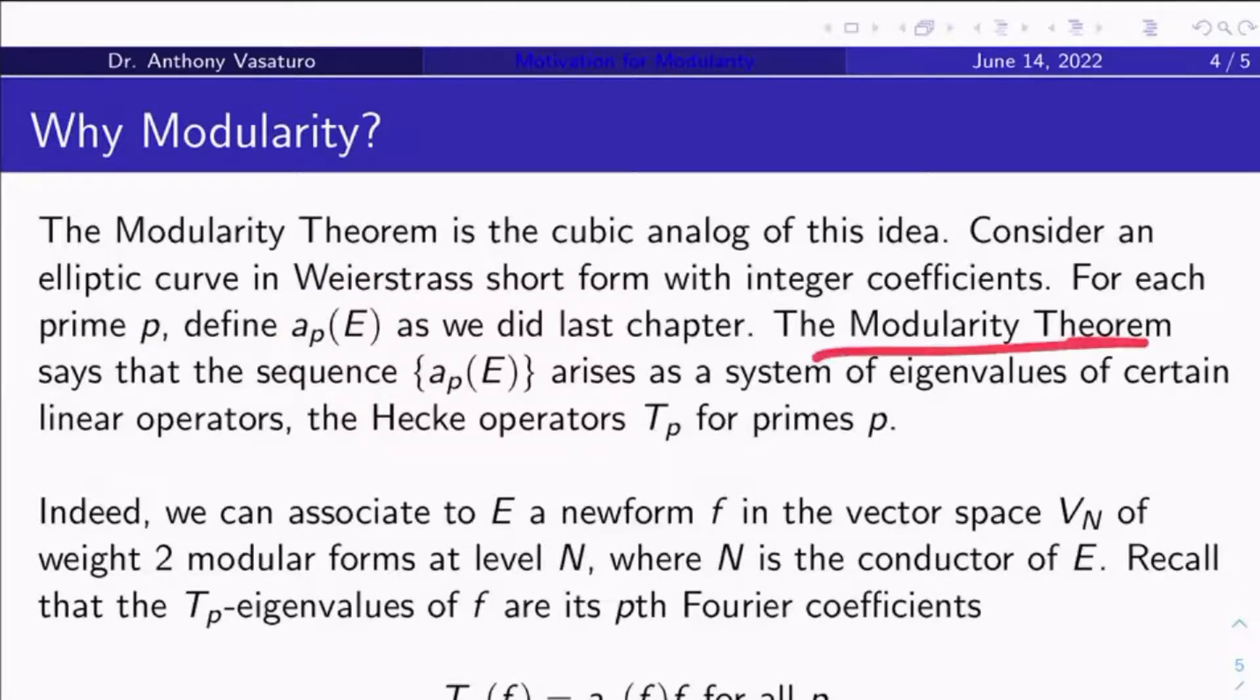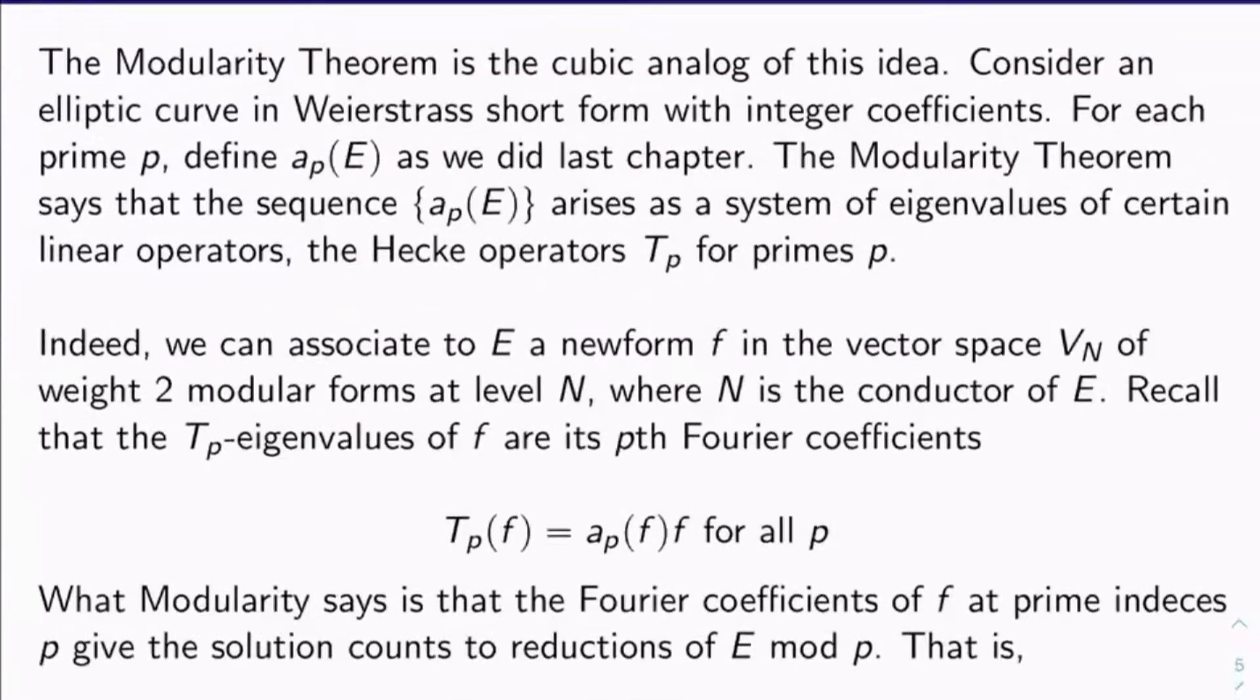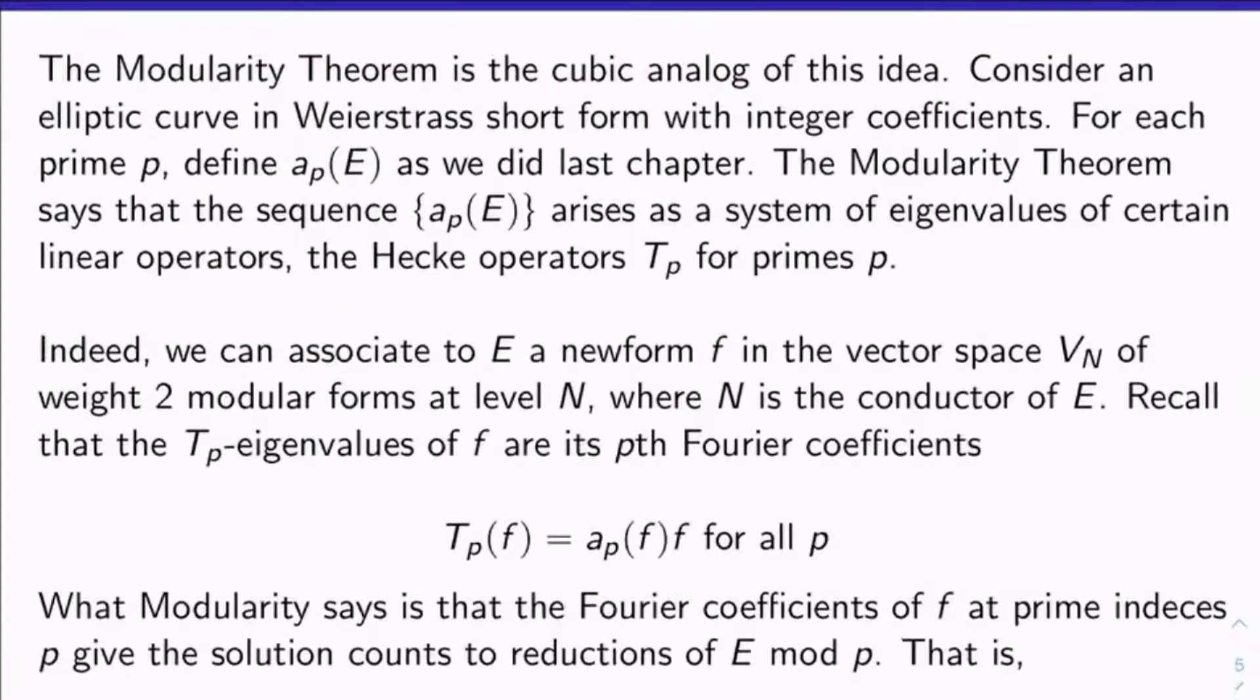What the modularity theorem says, as we now know, it says that the sequence of all these a_p(E)s, they actually arise as a system of eigenvalues for certain linear operators, the Hecke operators T_p for primes p. Do we know that? Why do we know that? We do. Remember, we can associate to E a new form f in the vector space, which I'll call V_N, just to match the above situation.